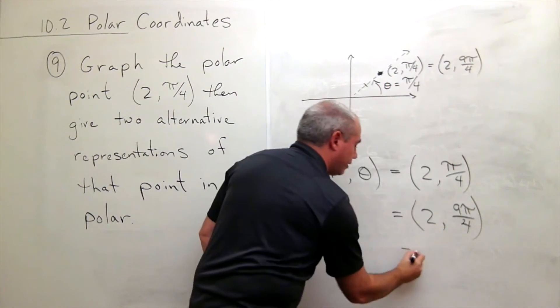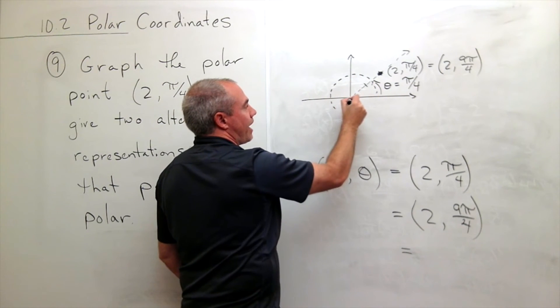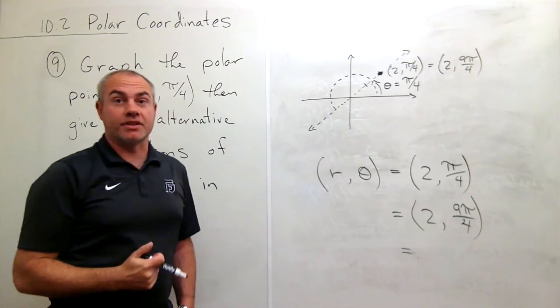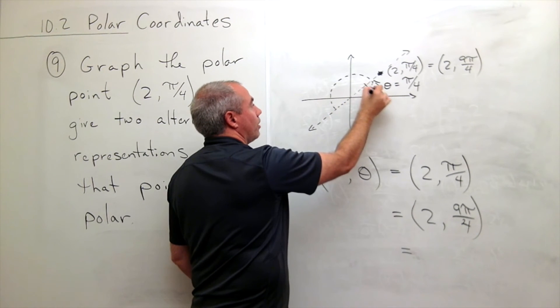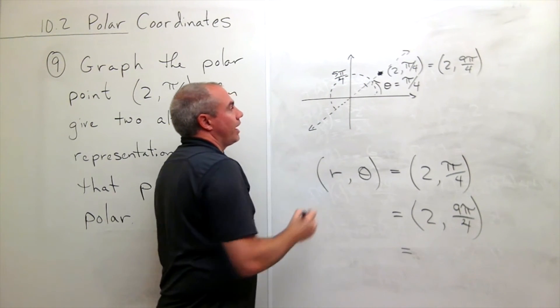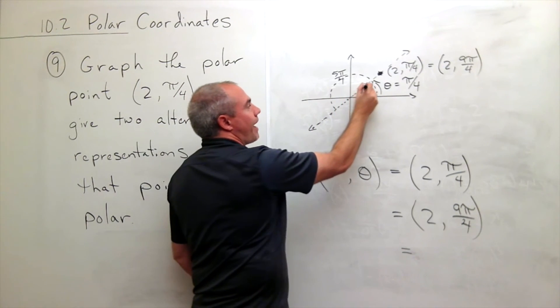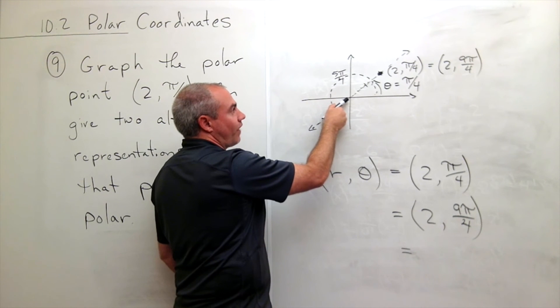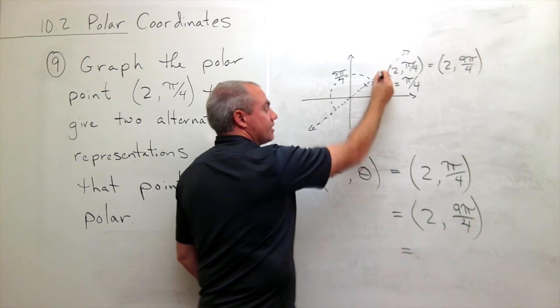Similarly, another way of thinking about it is, what if I went around until I was back here at—what angle is this? This is 5π/4. So this large angle is 5π/4. And then instead of walking in the positive direction, what if I walked backward 2? So if I were pointing this direction, 5π/4, and then I walked back 2 units, I'd get to this point.